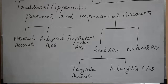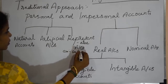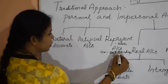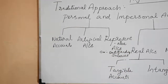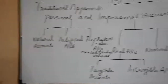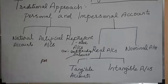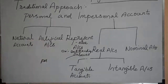Banks and financial institutions come under the artificial account. Representative accounts are accounts which represent a person or a group of persons. An example of this is outstanding salaries. Outstanding salaries comes under representative accounts — it represents the person or group of persons to whom salaries are payable.